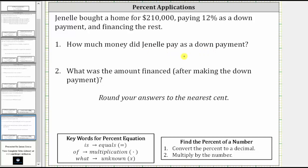Well, we know the down payment is 12% of the $210,000, and therefore we need to find 12% of 210,000.